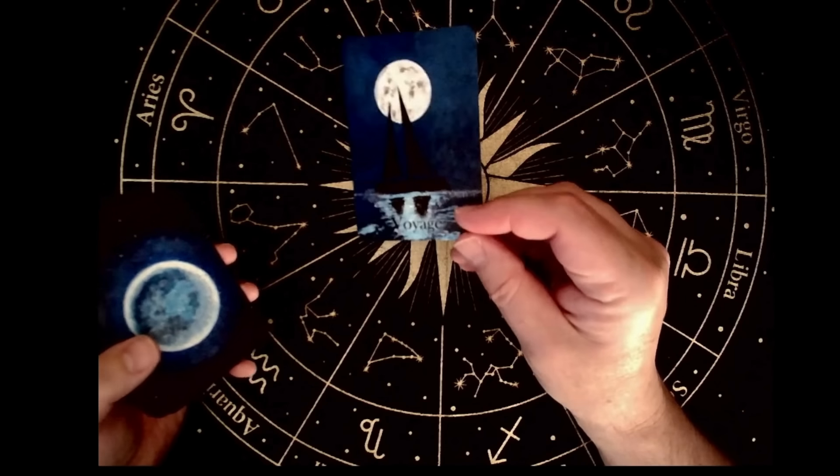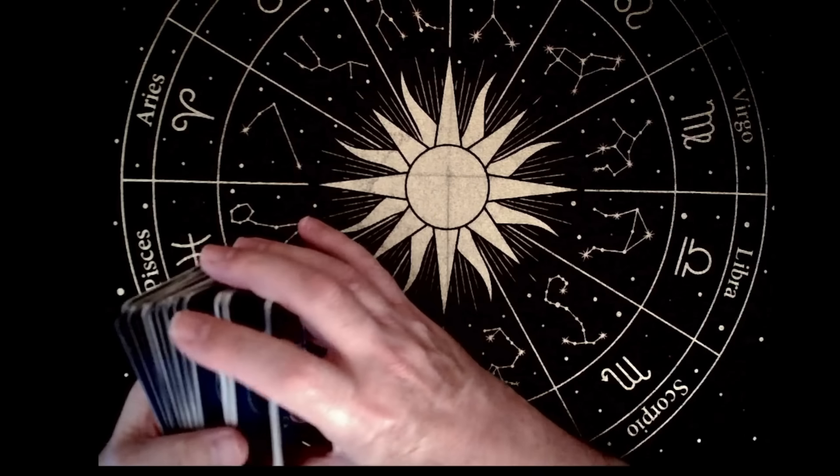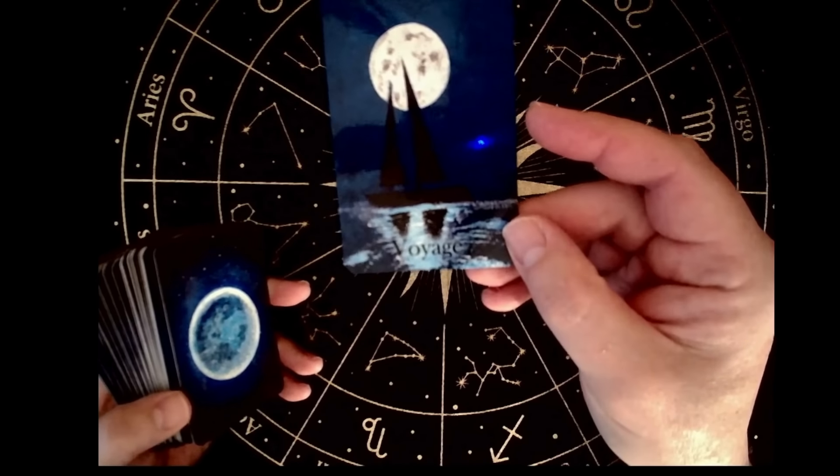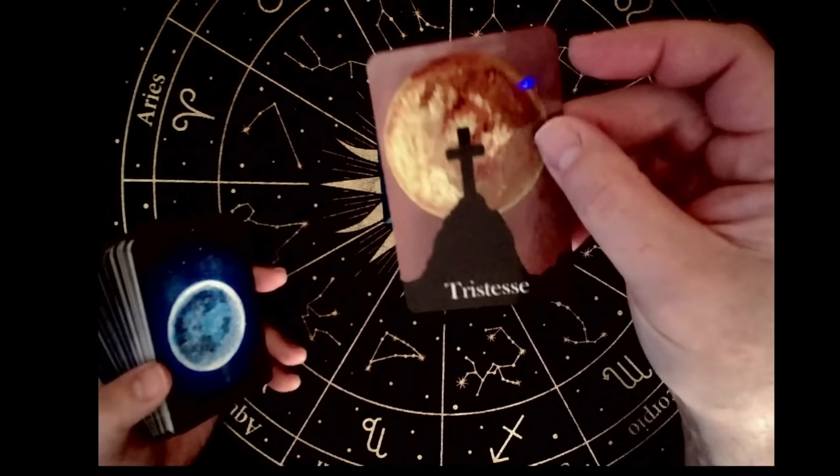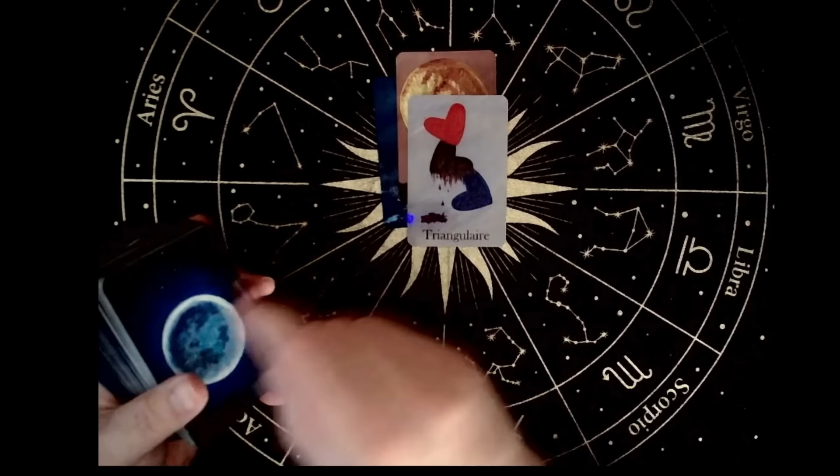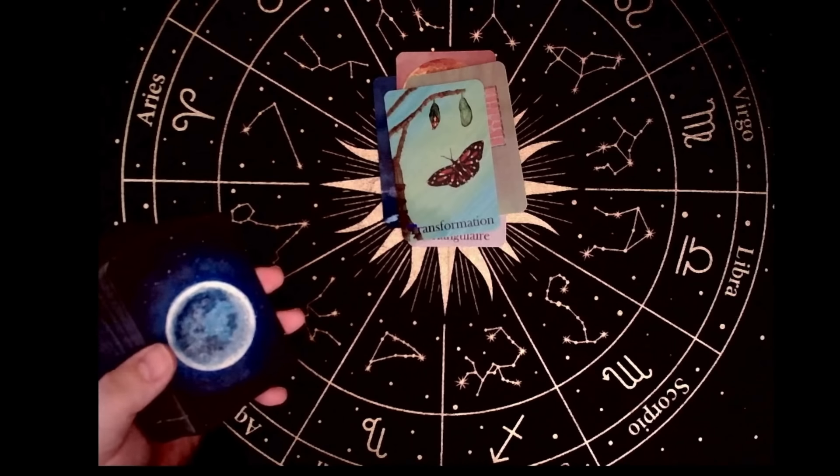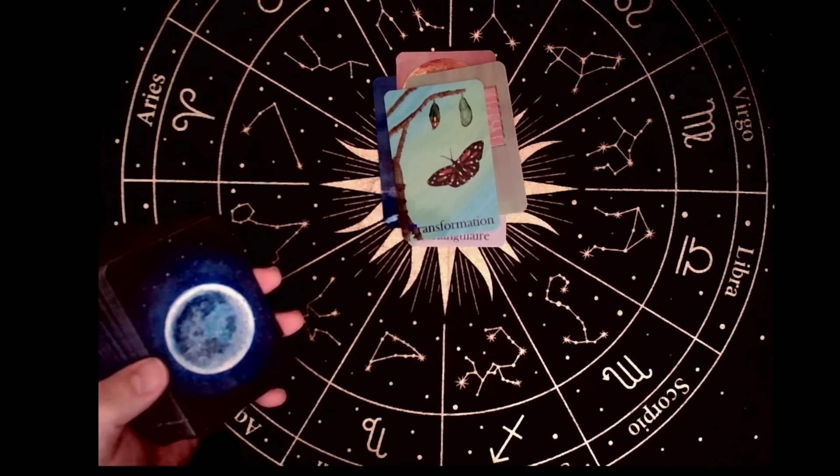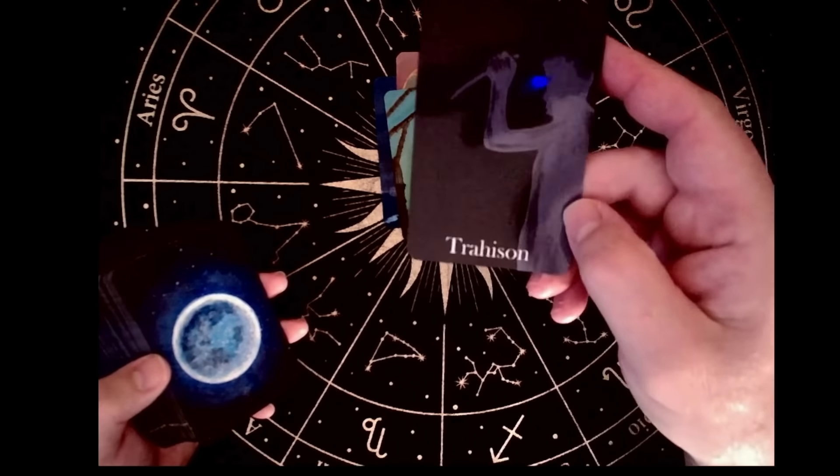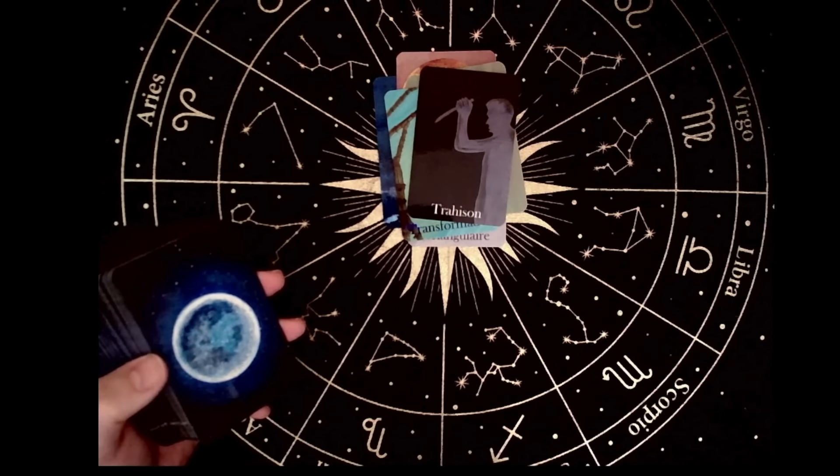Si vous débutez dans la voyance, je trouve que cet oracle est vraiment pas mal. Bon, certes, il a 80 cartes, c'est peut-être un petit peu important, mais ça ce n'est pas très grave. Vous prenez cette carte. La carte représente un bateau sous une lune avec un mot-clé voyage. Et tout l'oracle est comme ça. Les symboliques sont très fortes. On y voit, par exemple, la triangulaire, trois cœurs. On comprend vite ce que ça veut dire. Et le mot-clé est toujours facile à comprendre.